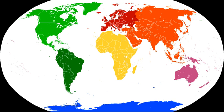A single Spanish islet known as Alboran Island is also debatably located on either the African plate or the Eurasian plate. This island is located in the Alboran Sea, 50 km north of the Moroccan coast and 90 km south of Spain.